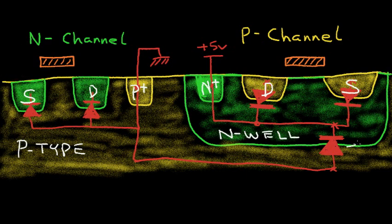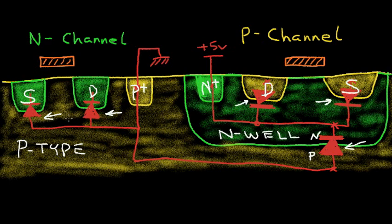Here we have a diode with a P-type and N-type forming a P-N junction. In the P-channel, we have a diode from the drain and from the source to the N-well region. In the N-channel, we have a diode from the P-type substrate to the drain and to the source region. It is very important that these diodes never become forward biased. That is why the substrate will usually be tied to the most negative potential — here it is tied to zero volts or ground. As long as the source and drain of the N-channel do not go below ground, we are okay.